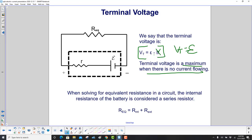When solving for equivalent resistance in a circuit, the internal resistance of the battery is considered a series resistor because all the charges flow through it. So R_equivalent equals r_internal plus R_external, where r_internal is represented by little r.